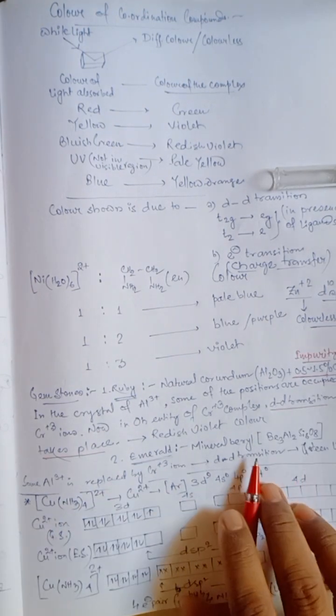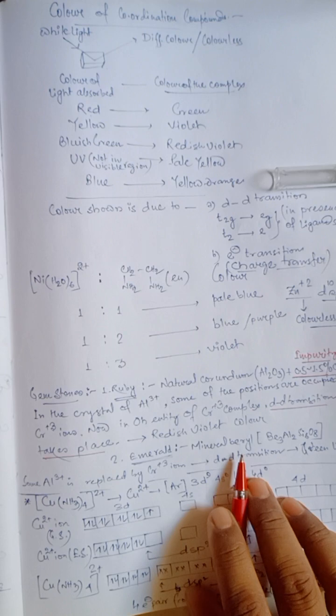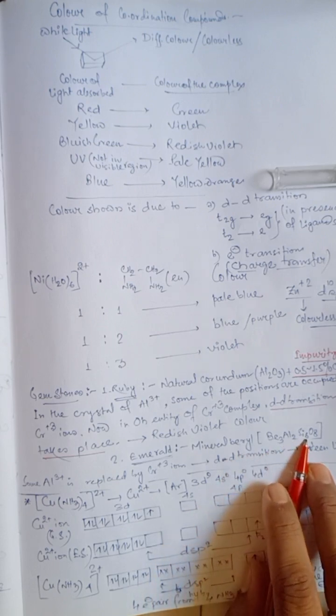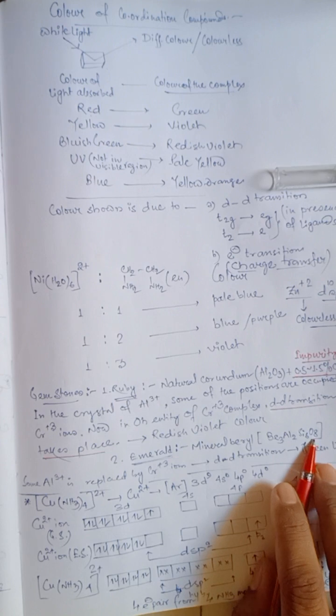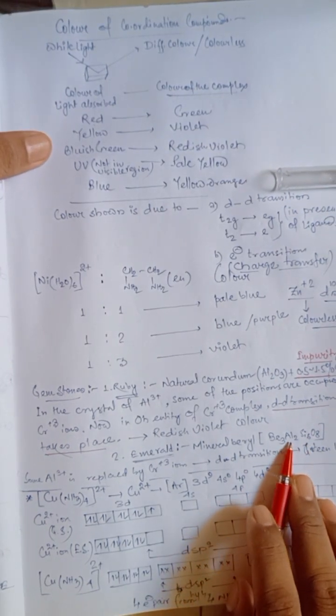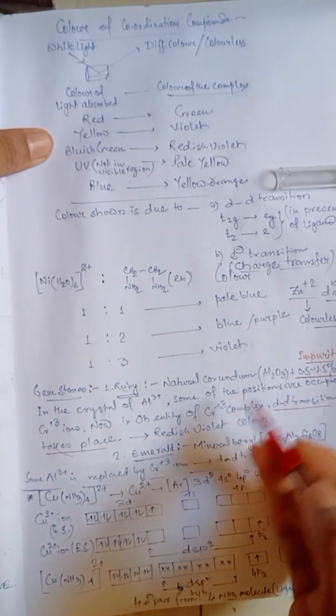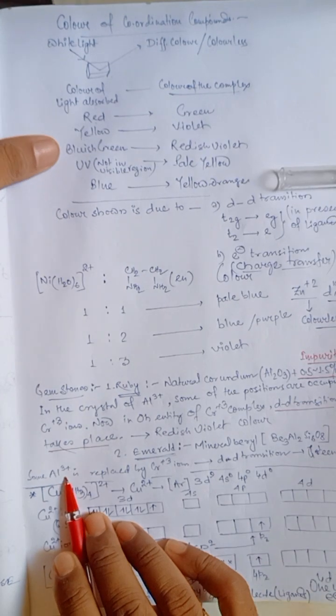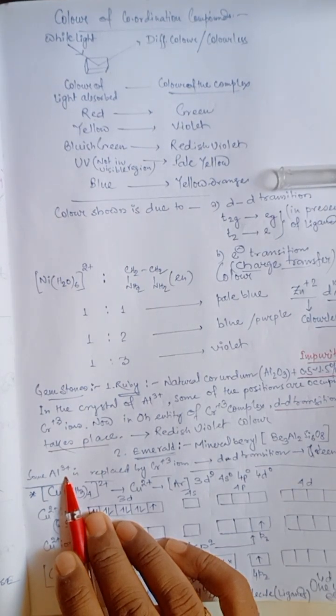Again, in the emerald, which is a mineral of beryl, that is beryllium 3, aluminium 2, Si 6, O18. This particular mineral of aluminium, some of the aluminium 3 plus ion in the lattice point is replaced by chromium 3 plus ion.